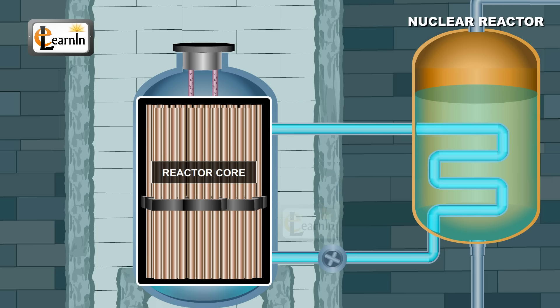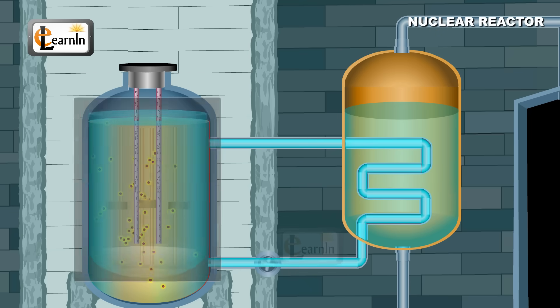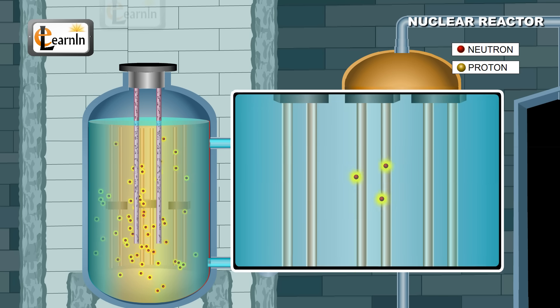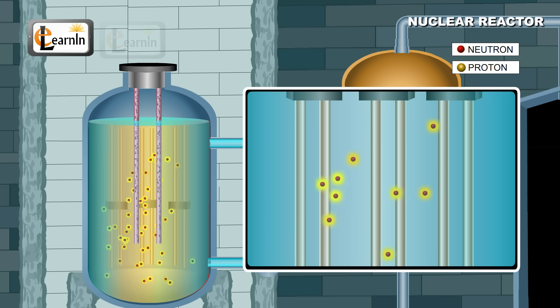This region where these fuel elements are placed is called the reactor core. These fuel elements are normally immersed in water which acts as a moderator. The objective of a moderator is to slow down the energy neutrons in nuclear reactor which are produced during the nuclear fission process by the fuel elements.